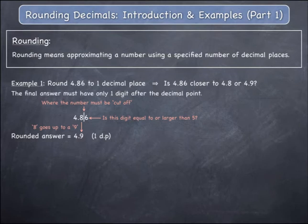All remaining digits after the line are dropped, giving the final rounded answer of 4.9 expressed to one decimal place. This means that 4.86 is more closely approximated by 4.9 than it is by 4.8.